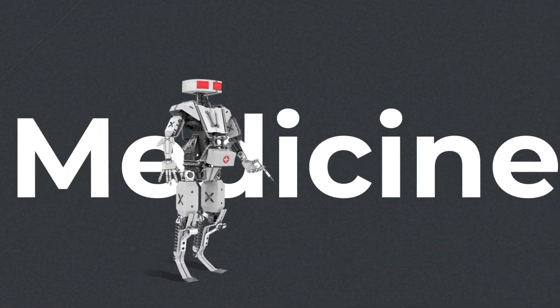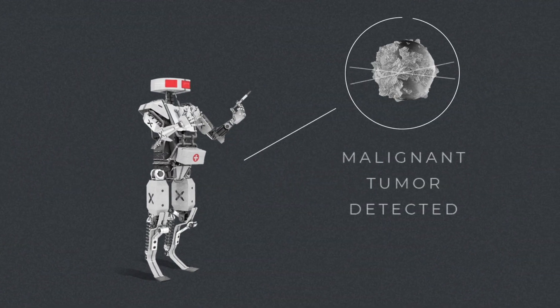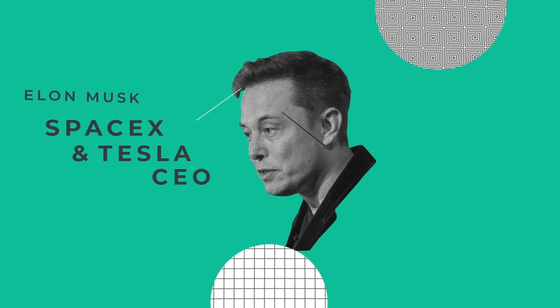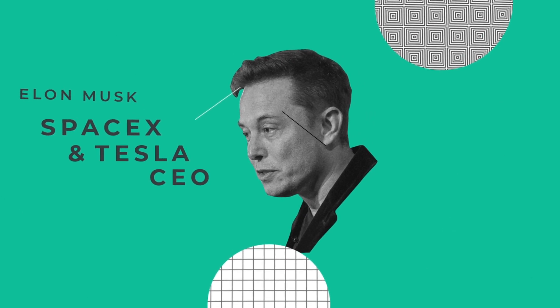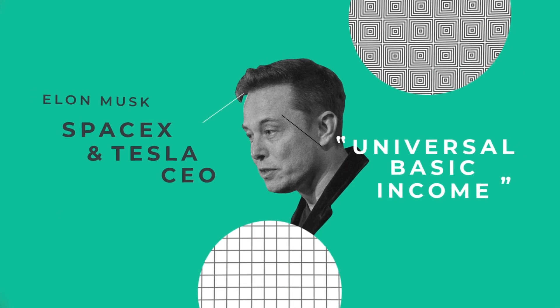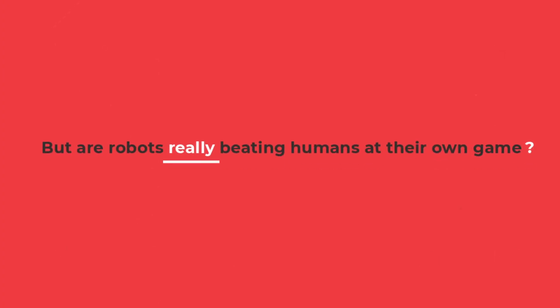Robots have made strides in medicine, and some can even identify malignant tumors more effectively than radiologists. To make up for jobs humans are losing to robots, big-name skeptics like SpaceX and Tesla CEO Elon Musk say we'll need a universal basic income to make up for the lost jobs. But are robots really beating humans at their own game?